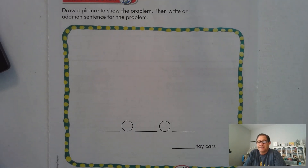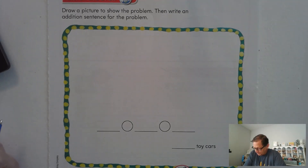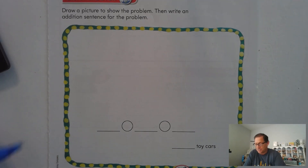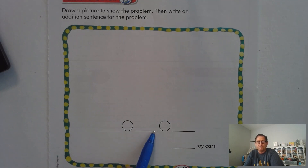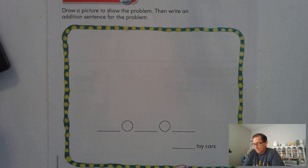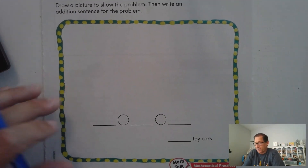Nathan has 6 toy cars. Alicia gives him 6 more toy cars. How many toy cars does Nathan have now? Draw a quick picture for that — he has 6 cars, Alicia gives him 6 more — and then write an addition sentence.